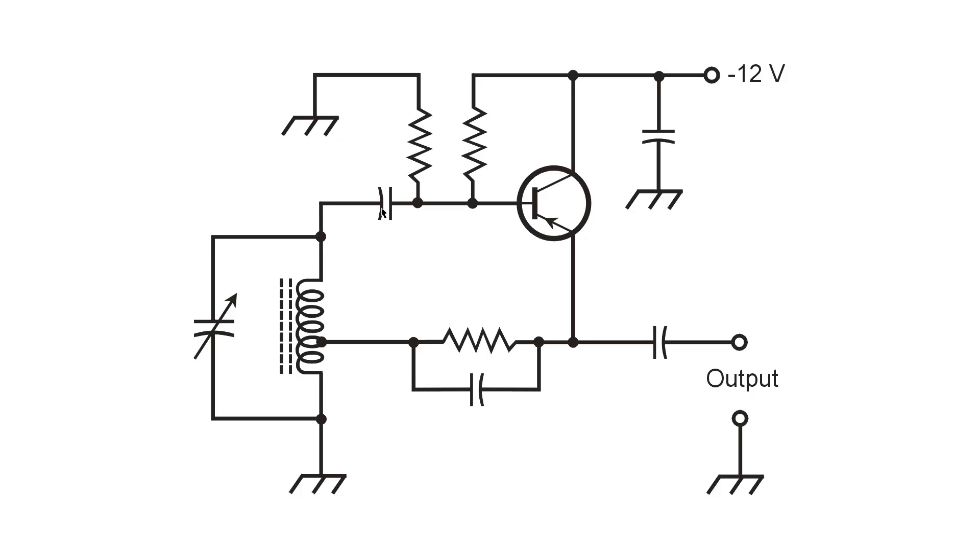It's a blocking capacitor and it should be a fairly large value, 0.01 microfarads, something like that. It has nothing to do with determining the resonant frequency of this circuit here which determines the frequency of oscillation.